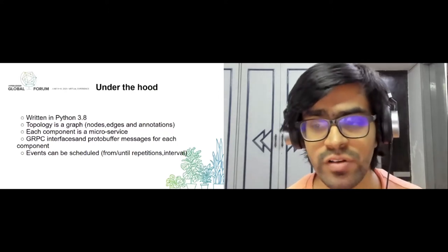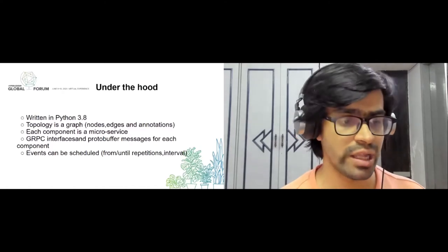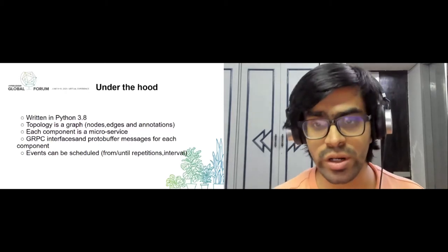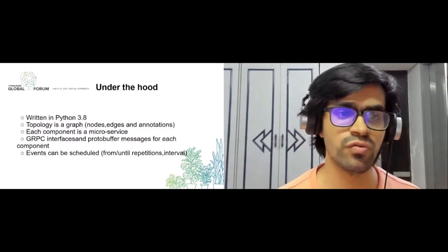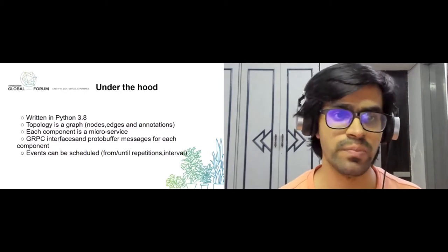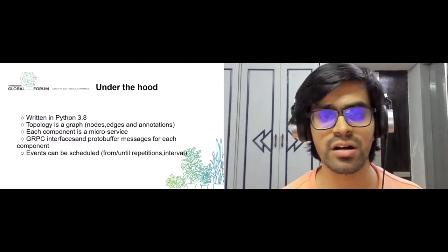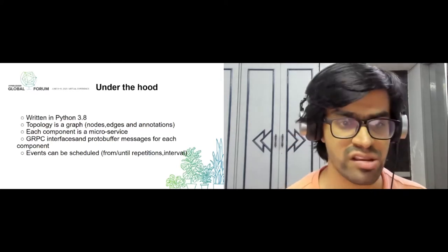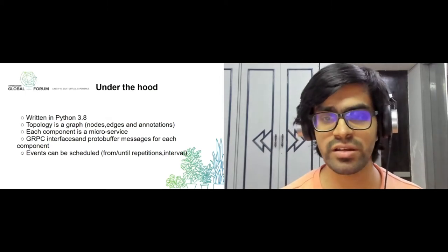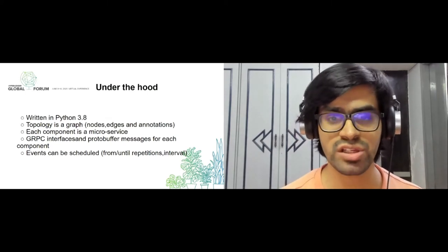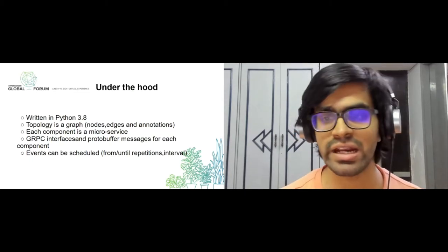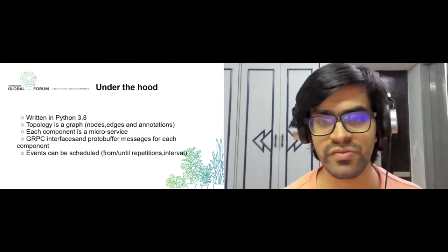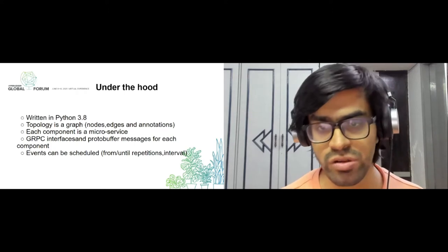A microservice is essentially an upgrade over monolith architectures where each service is its own unique entity. Whether it's a blockchain network, we'll have different types of microservices, and each one of the components is a unique microservice within the Umbra landscape. The gRPC interfaces and Protocol Buffers are used for each one of these components, and based on these, events are scheduled with defined repetitions and intervals.